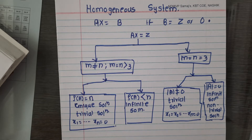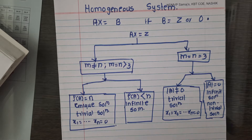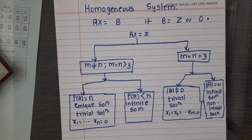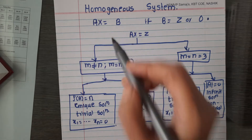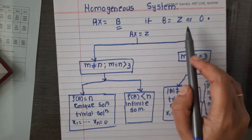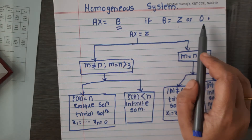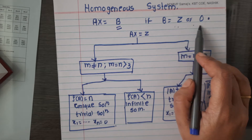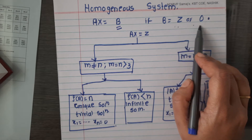Greetings and welcome. Today we will see the topic Homogeneous System of Equations. In the previous lecture we learned that if matrix B is a zero matrix or null matrix, the system is homogeneous.